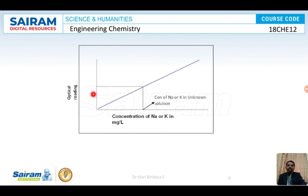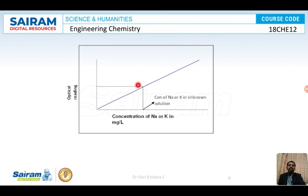The optical readings from the flame photometer are plotted against the concentration of sodium or potassium. For 2, 4, 5, 6, and 8 PPM you have individual readings. For the unknown solution, you have the optical reading but not the concentration. Once you plot the graph, you mark the unknown reading on the intensity axis, draw a dotted line until it touches the curve, then draw a perpendicular line to the concentration axis. That value is the concentration of sodium, potassium, lithium, or calcium in the unknown solution. Thank you.